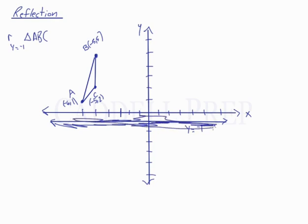And this line represents y equals negative 1, because anywhere on the line, the y value is negative 1. It doesn't matter what the x value is, it's negative 1 for the y value all along this line.